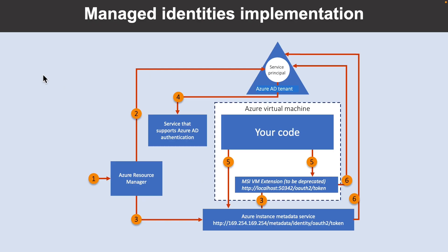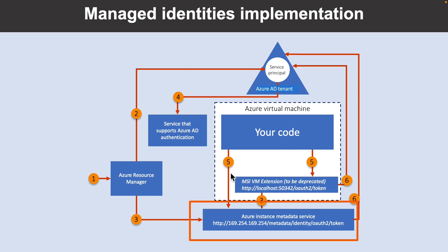This diagram illustrates how a managed identity works with an Azure Virtual Machine. First, Azure Resource Manager receives a request to enable the system assigned managed identity on a virtual machine, or create a user assigned managed identity and assign it to a virtual machine. Then Azure Resource Manager creates a service principal in the Azure AD for the virtual machine identity. The service principal is created in the Azure AD tenant that's trusted by the subscription. Then Azure Resource Manager configures the identity on the virtual machine, updating the Azure Instance Metadata Service identity endpoint with the service principal client ID and certificate.